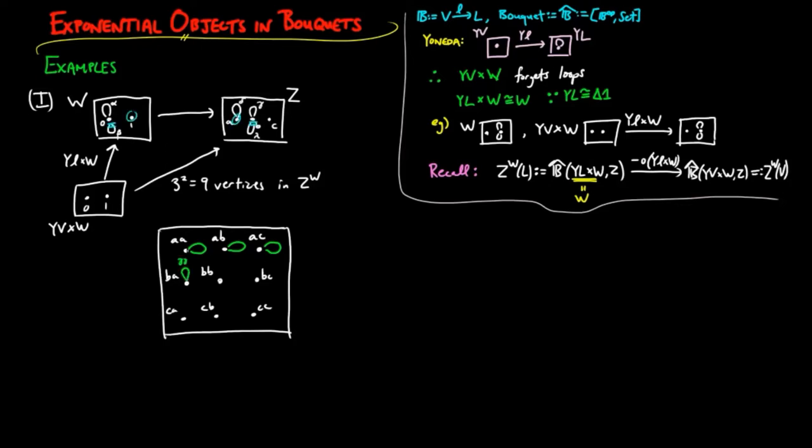Then in the second row, when 0 is mapped to B, we have four choices where we can map the petals alpha and beta to. Hence each of these flowers have four petals. Finally, if the vertex 0 is mapped to C, there are no morphisms from W to Z, since the vertex C in Z has no petals. Therefore, the bouquet Z to the W has nine flowers and 15 petals or loops.